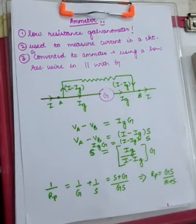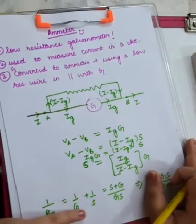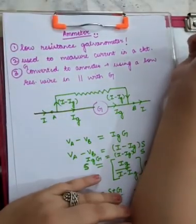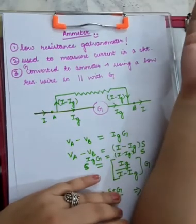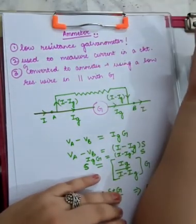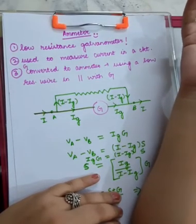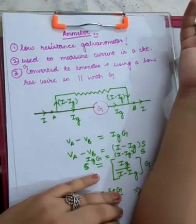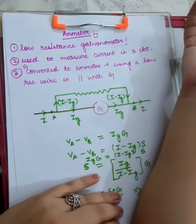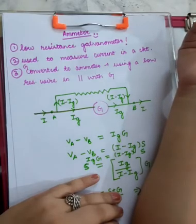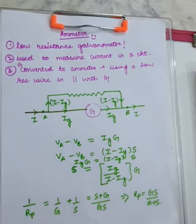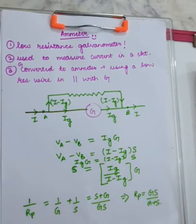Now let's study how a galvanometer is converted into an ammeter. An ammeter is that galvanometer which has a pretty low resistance. An ammeter is used to measure the value of current in the circuit — how much current is flowing. Let us now study how we actually carry out this conversion.